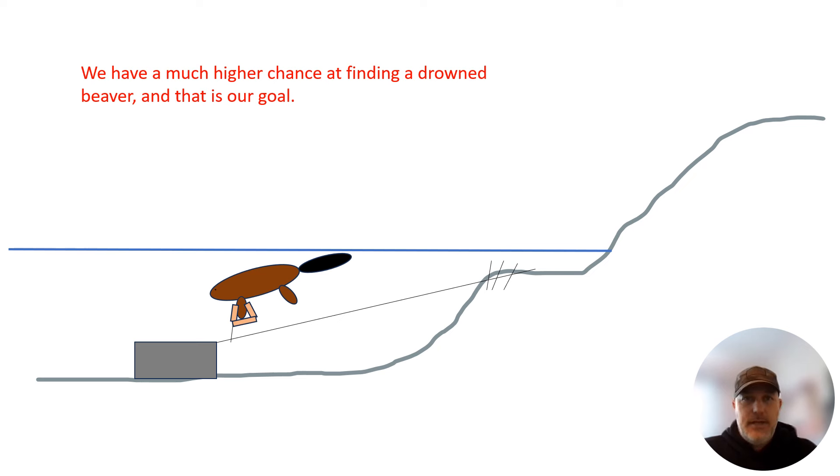When we have a front leg catch, we increase our odds of finding a dead beaver upon our trap check. It takes a lot less water to drown a beaver on a front leg catch than it does on a back leg catch.